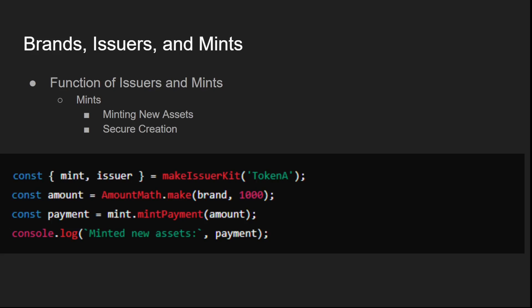By understanding the roles of brands, issuers, and mints, you can effectively manage the lifecycle of digital assets in your Agoric smart contracts. Brands provide a clear identification of asset types.